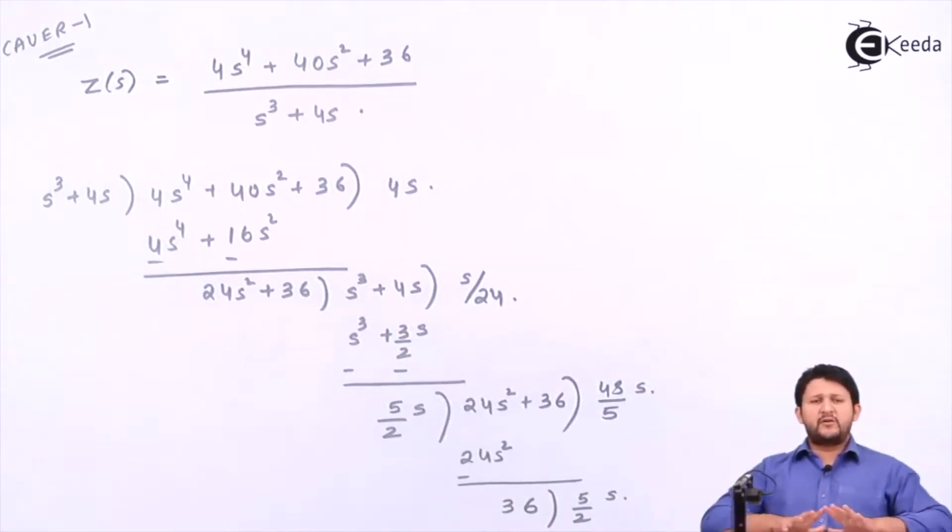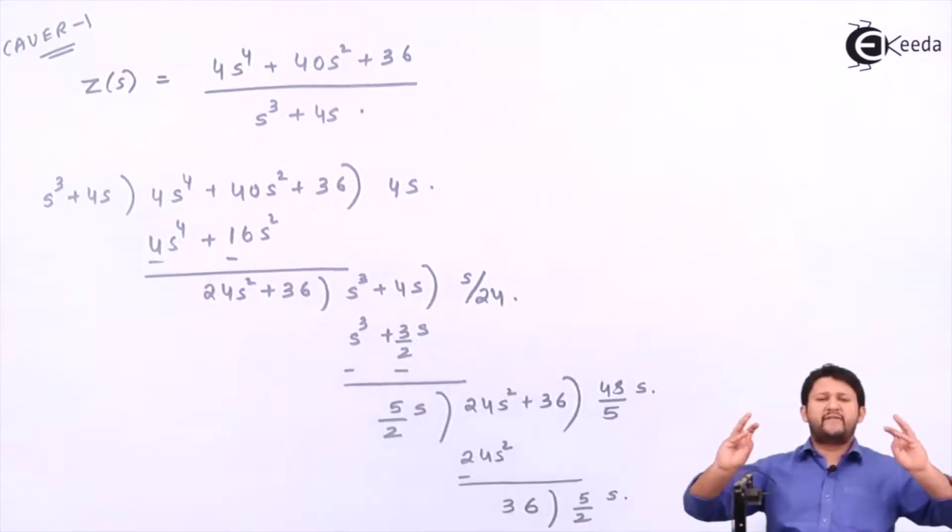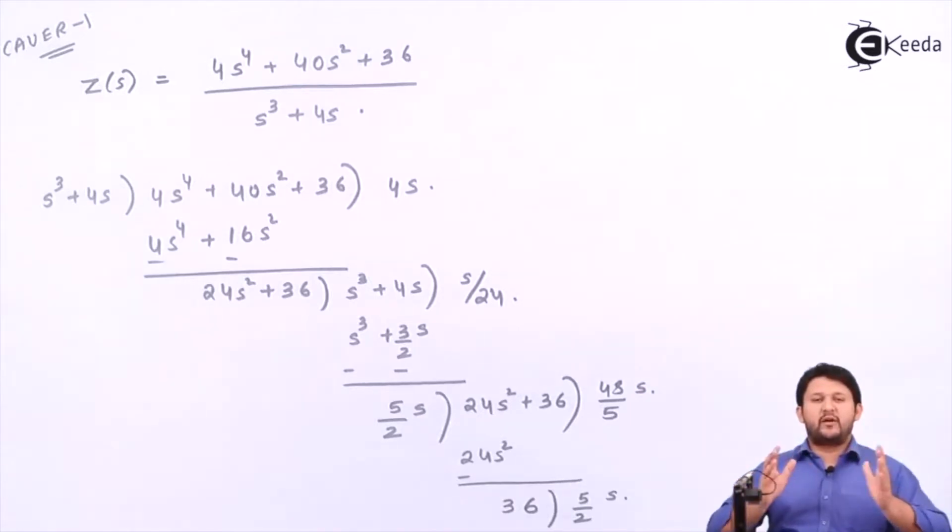There is nothing to teach you in this. It is similar to your type one, type two, type three, type four—all the four types which we did about Hurwitz. We learned about the continued division. The same thing you need to follow over here. Your eighty percent of the sum remain the same. Only the twenty percent, the new thing which I'll be teaching you, that is about your network—how to draw the realization network for LC function for Cauer Form I.